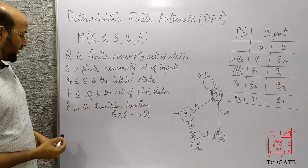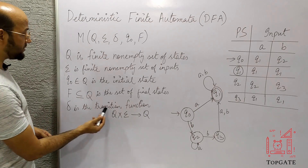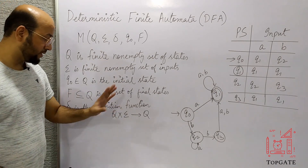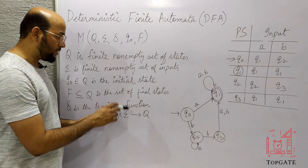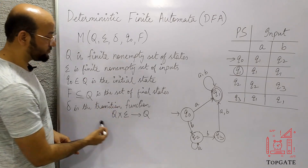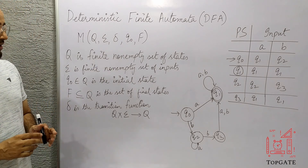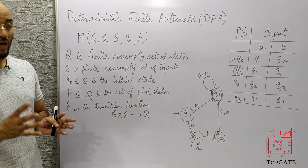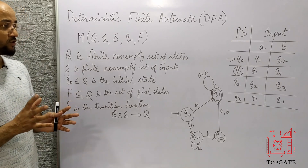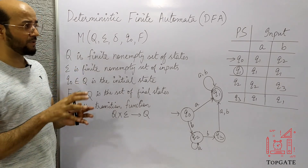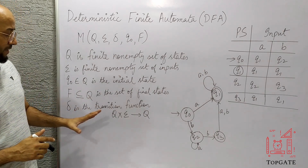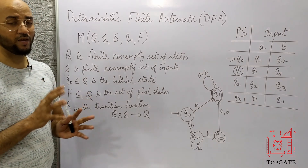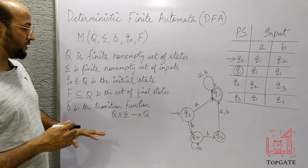The last and most important one is the transition function, called delta. Delta is a transition function: Q cross sigma gives Q. The whole working of the finite automata depends upon this transition function. When an automaton processes something, it transits from one state to another depending on the particular input applied at that instant of time.